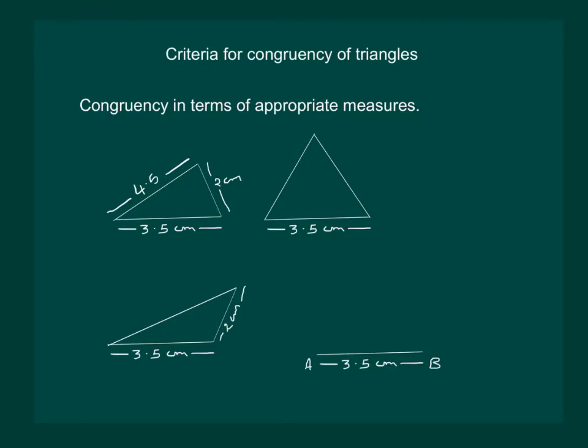Now we will draw a line segment of length 3.5 cm and say we name it AB. Then with A as center and 4.5 cm as radius, draw an arc.